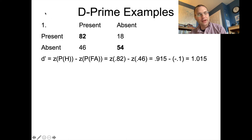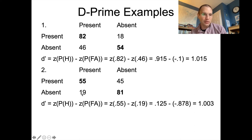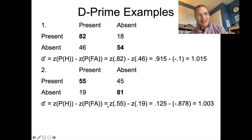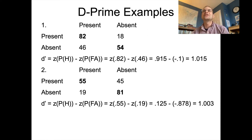We can look at the other dataset, which has equivalently 136 correct responses. Looking at the hits — 55 out of 100, so 55% — and false alarms — 19 out of 100, so 19%. The Z-score of 55% is 0.125, just over zero since it's just over 50%. The Z-score of 19% is negative 0.878. Subtracting gives 1.003, so they're both about one Z-score apart. This makes sense because both datasets have the same overall percentage of correct responses — that's what sensitivity represents.